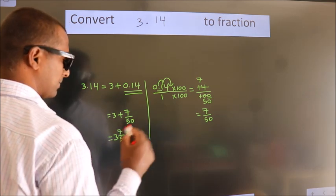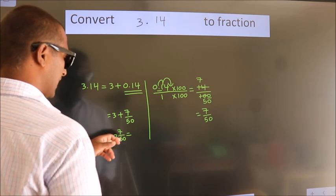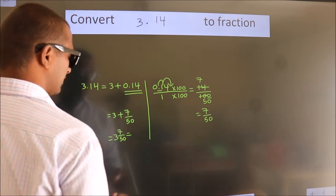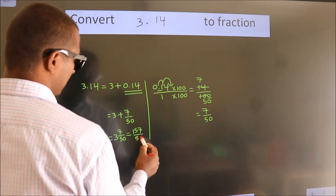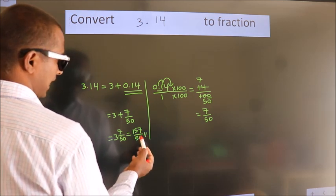And in improper fraction it is 3 into 50, 150 plus 7. 157 by 50 is our entire fraction.